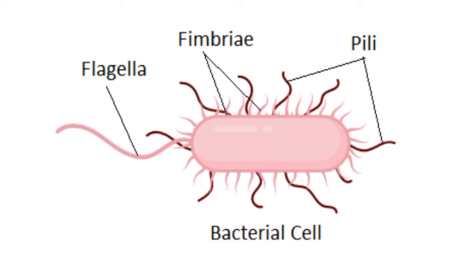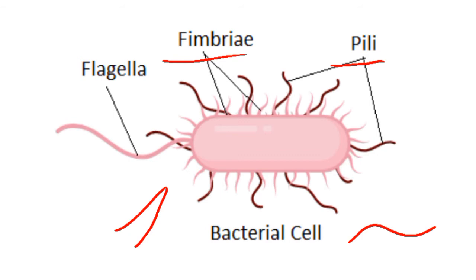As you can see in this diagram, pili are hair-like structures while fimbriae look like bristles. You can also notice that pili are longer while fimbriae are shorter. You can also notice that pili are thicker while fimbriae are thinner.